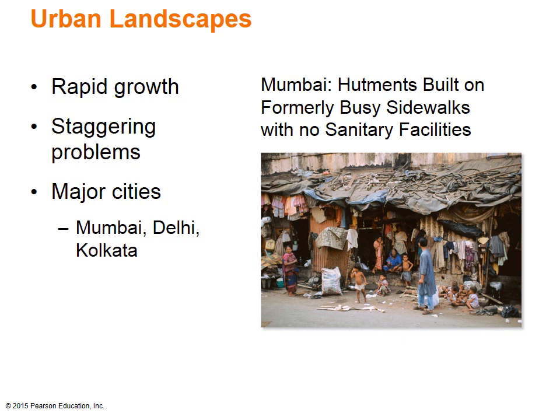Hutment construction is forbidden in many areas, but wherever it is allowed, sidewalks quickly disappear. Located in Delhi are embassies, luxury hotels, government office buildings, and airline offices necessary for a vibrant political capital. Kolkata, on the other hand, is emblematic of the problems faced by rapidly growing cities in developing countries — this city is overpopulated and underserviced.